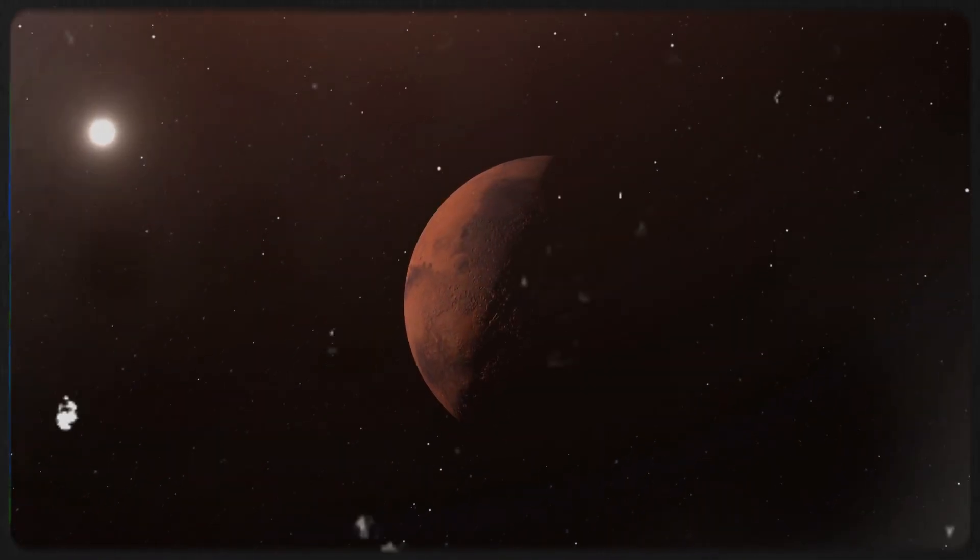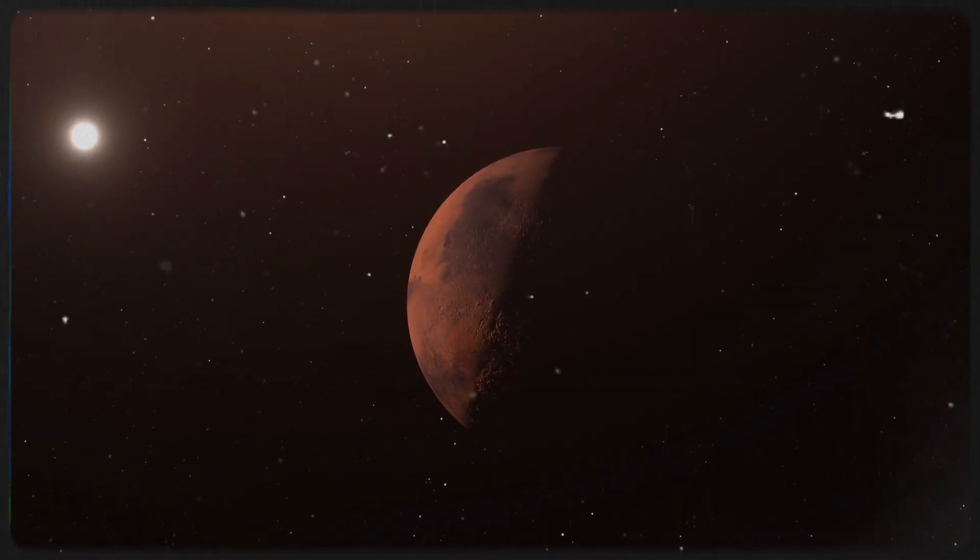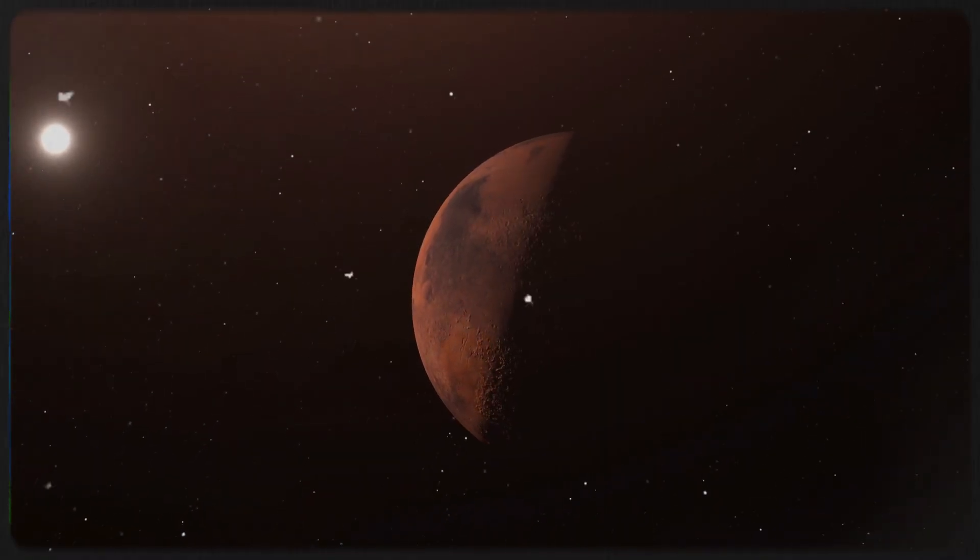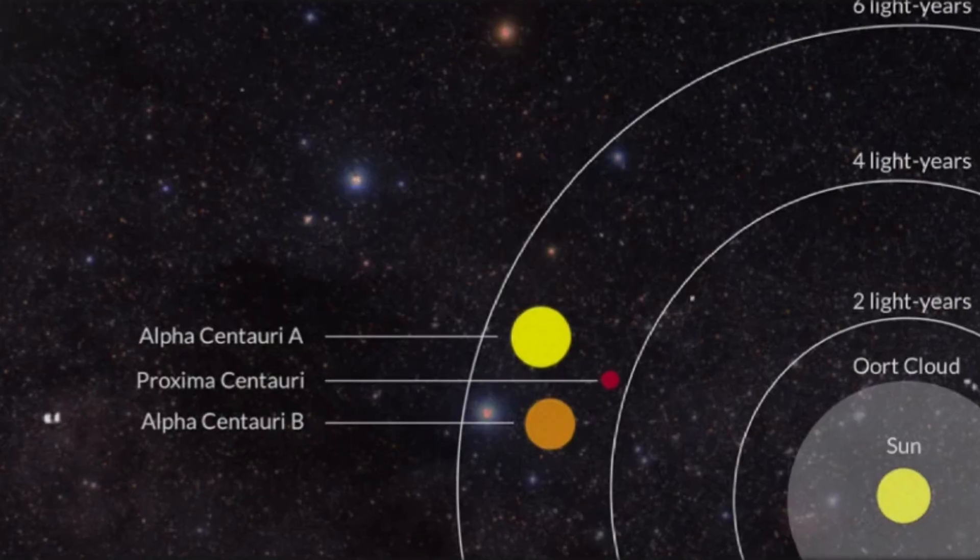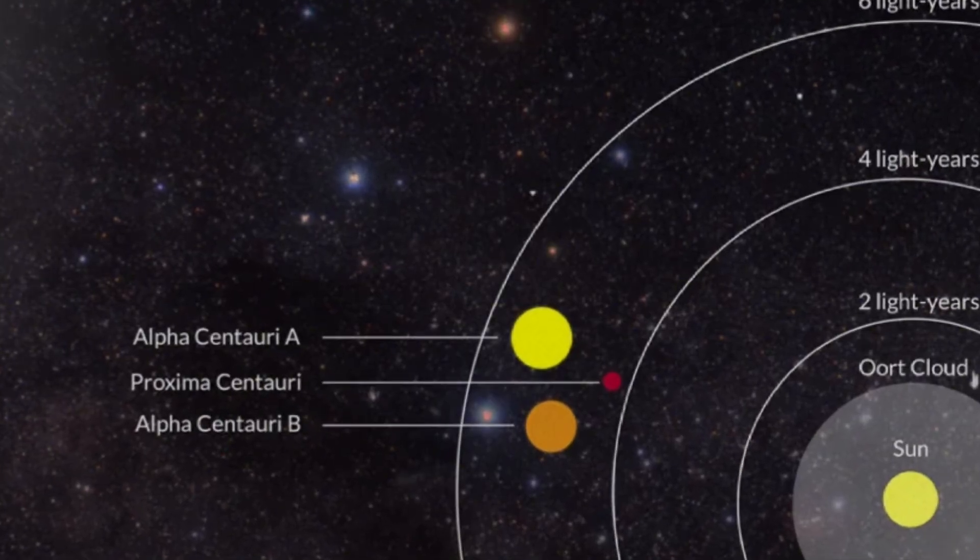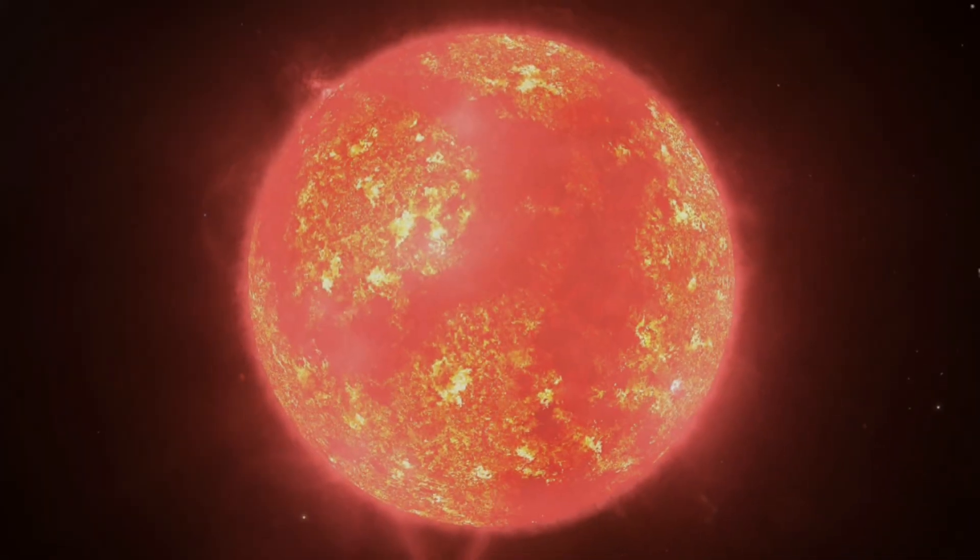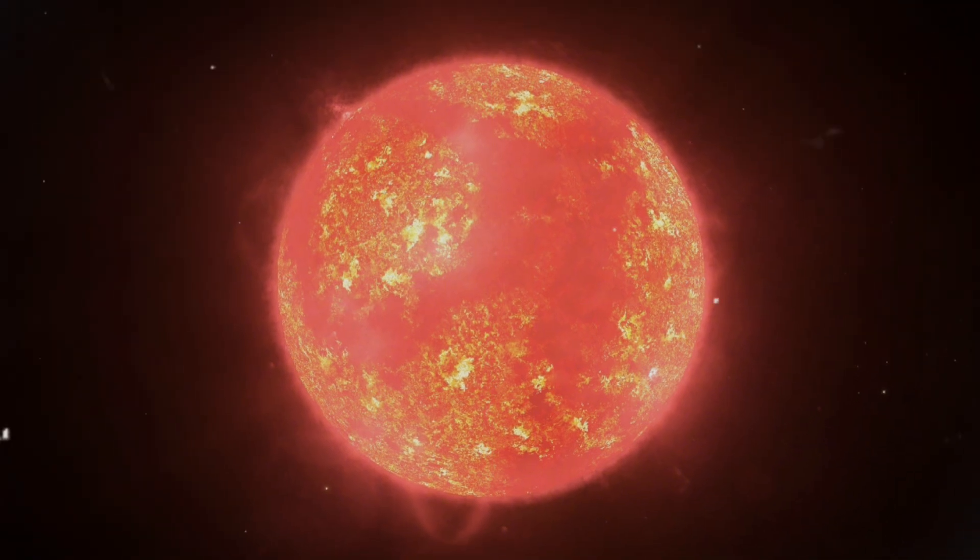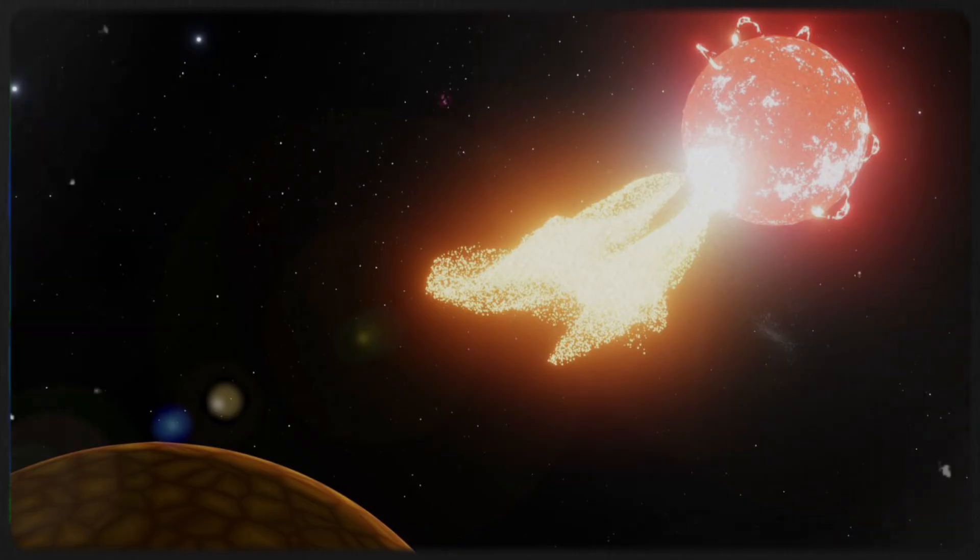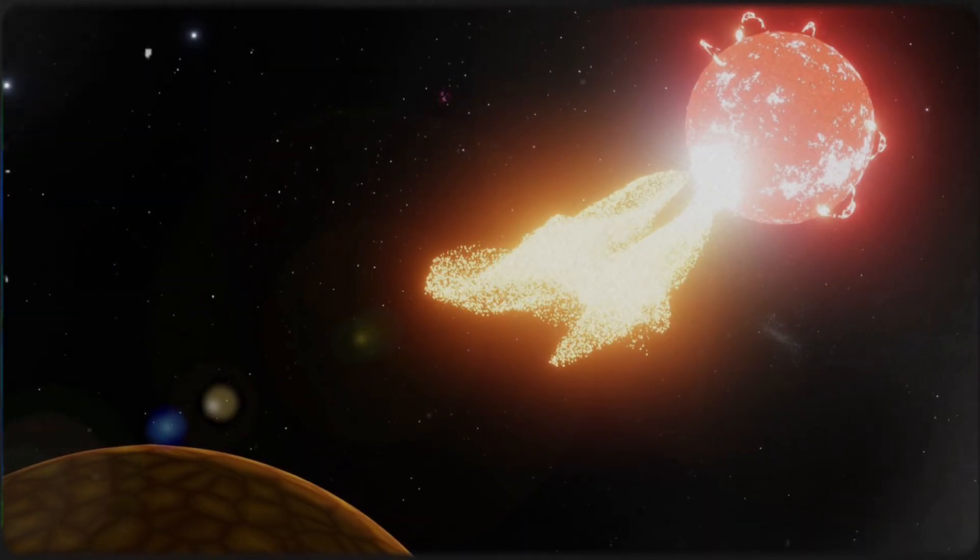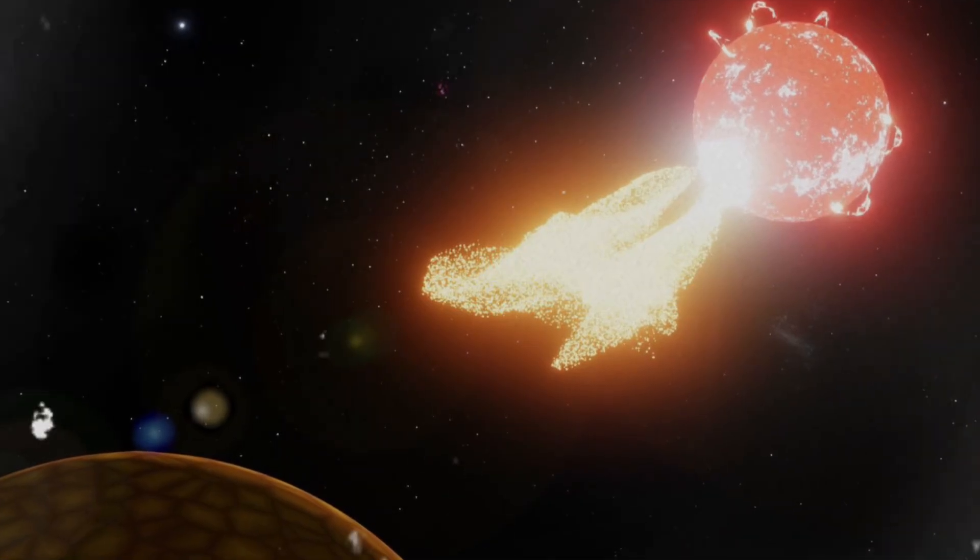Proxima b, an exoplanet orbiting the closest star to our sun, challenges our understanding of planetary habitability. Situated just 7.3 million kilometers from its host star, Proxima Centauri, it completes an orbit in only 11.2 Earth days. This proximity comes at a cost. Proxima Centauri is a red dwarf, a type of star known for its violent solar flares. Unlike our sun, red dwarfs frequently unleash intense radiation bursts that could strip away a planet's atmosphere, making the prospects for life far more uncertain.